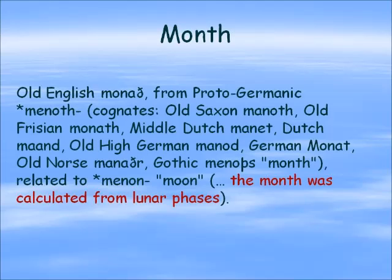The word 'month' and the idea of a month is connected to the moon, as we can see from etymology — the origin-of-words dictionary shows that the word 'month' comes from the moon, and that the month has been calculated from the lunar phases. We find this in many, many civilizations for thousands of years.